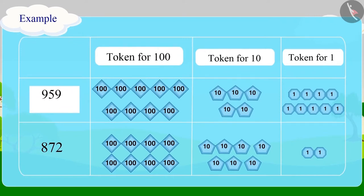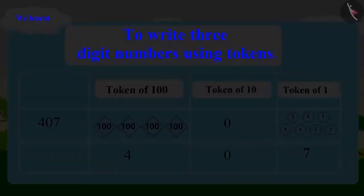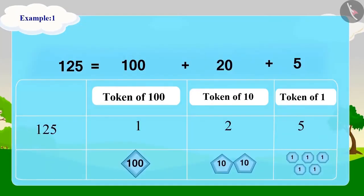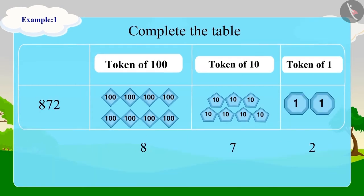Well done children, you have given the correct answers. Appu is so happy to see so many gifts. So children, in this lesson we learned to write three-digit numbers using tokens.